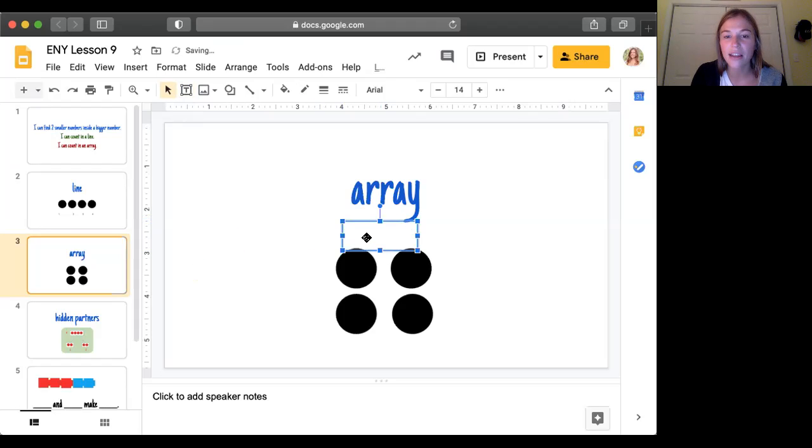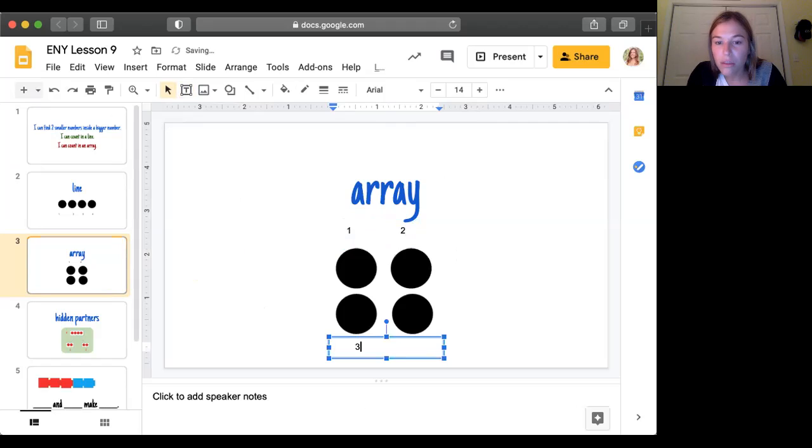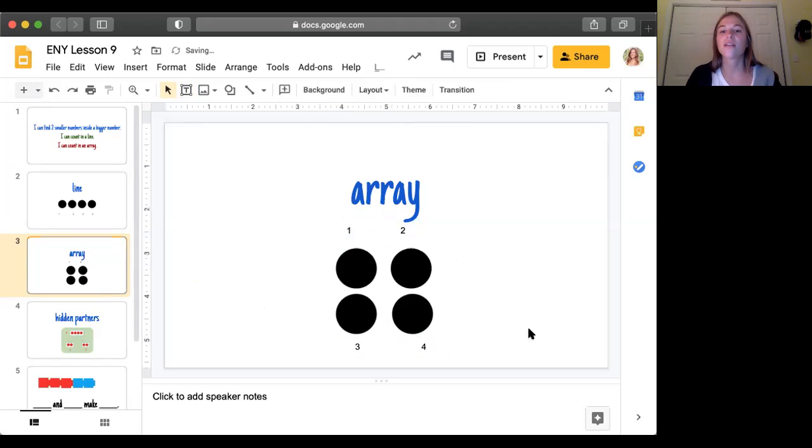So I'm writing one, two, and then I have to label the other two, so I have one, two, three, and four. So there I labeled again and I can count in an array.